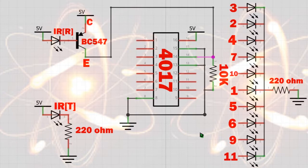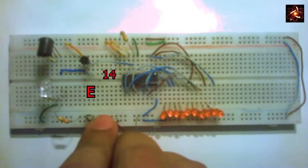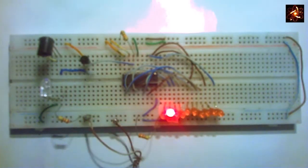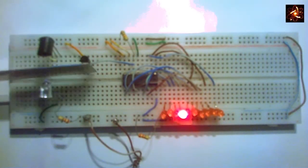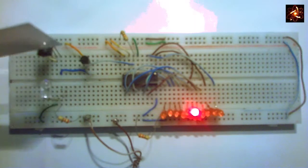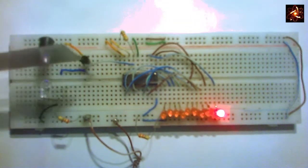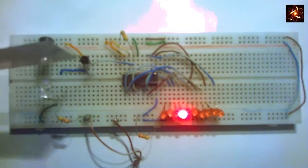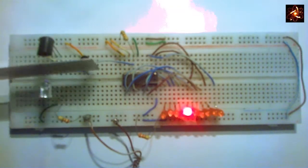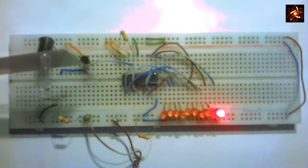This is the complete circuit. Now connect power to the circuit. Every time any object appears between the IR receiver and transmitter, the LED shifts one by one.